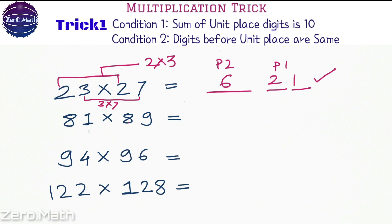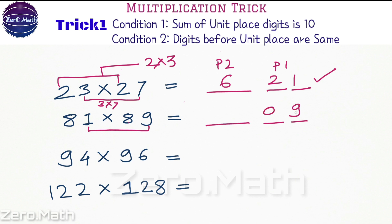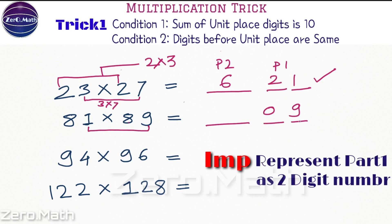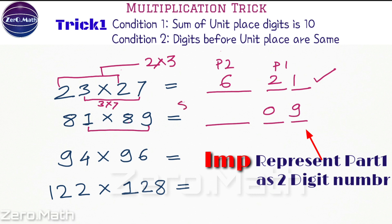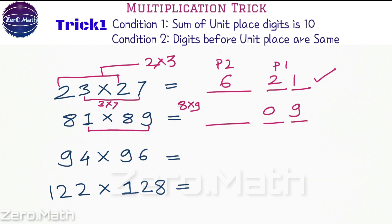Let's take the next example. Here again 1 plus 9 equals 10, so the unit place digit sum is 10, and the digit before the unit place is 8, which equals 8. Hence I can apply this trick. Again I will split into two parts: 9 into 1 is 09 — remember we always represent this number in two-digit form, so 9 is written as 09. The next consecutive digit of 8 is 9, so 8 into 9 is 72. So 7209 is our answer.